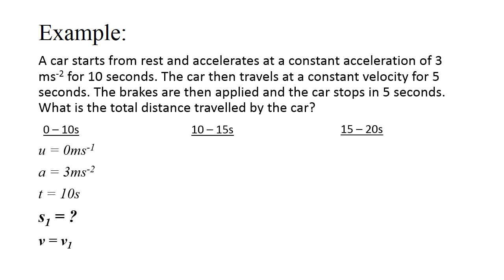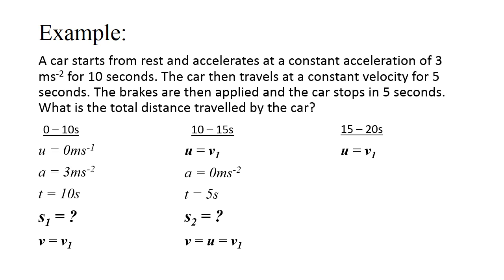For the second stage (10 to 15 seconds), the initial velocity equals V1. Constant velocity means no acceleration, so a equals to 0, and the time period is 5 seconds. We need to find displacement S2. The final velocity also equals V1 since there is no acceleration. For the third stage (15 to 20 seconds), the initial velocity is V1. Time is 5 seconds, and the final velocity is 0 metres per second since the car stops. We need to find displacement S3.